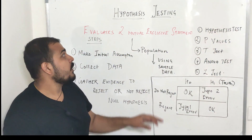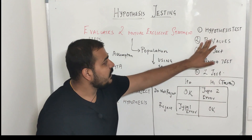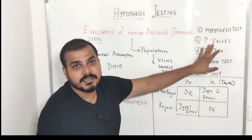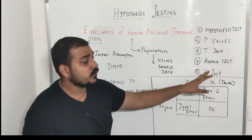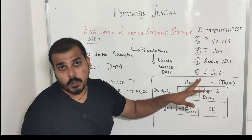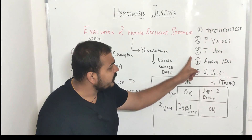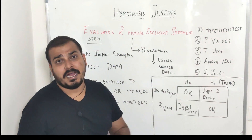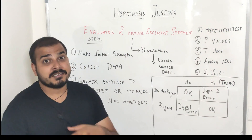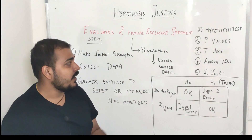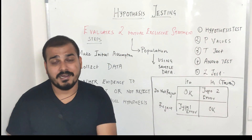This will just not be one video. I'm going to explain you about hypothesis testing. Then in the next video, we'll be discussing about p-values, t-tests, ANOVA tests, and z-tests — which is also called as z-score. Apart from that, I'll also be discussing about chi-square tests. So these are all the types of hypothesis testing: t-test, ANOVA test, z-test, chi-square test, and many more. We'll also be discussing about p-values in the later classes.